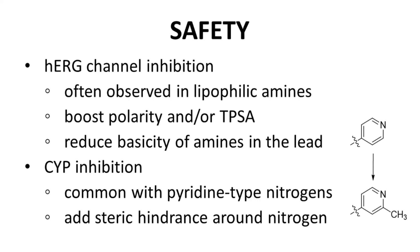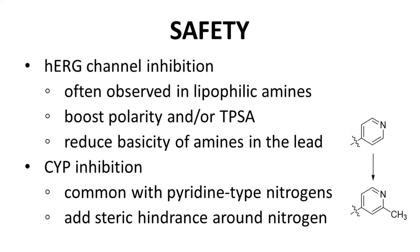Another common safety risk is inhibition of one or more cytochrome P450 enzymes, which can lead to drug-drug interactions. Inhibition is often linked to pyridine-type nitrogens, which can bind the heme iron in the active site of the enzyme. Introducing a steric group, even just a methyl, next to the nitrogen can reduce inhibition.